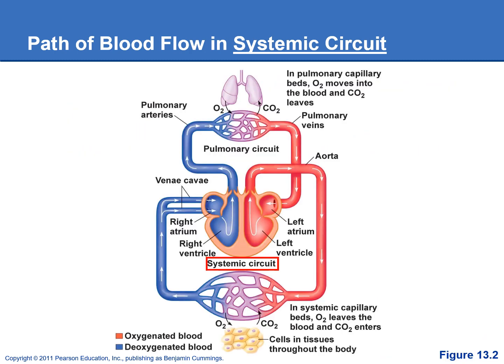The systemic circuit starts with the left side of the heart. The left ventricle pumps oxygenated blood out through the aorta and out to the rest of the body. We do gas exchange in the tissues — dropping off oxygen and picking up carbon dioxide. Then the deoxygenated blood returns back to the right side of the heart through the vena cava. That's the systemic circuit.